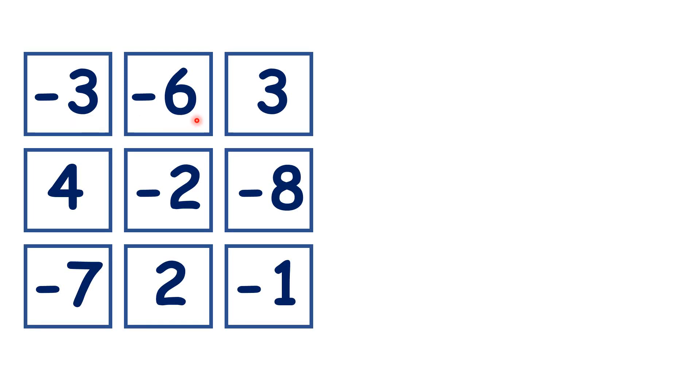In magic squares, all of the rows, columns, and diagonals add up to the same number.